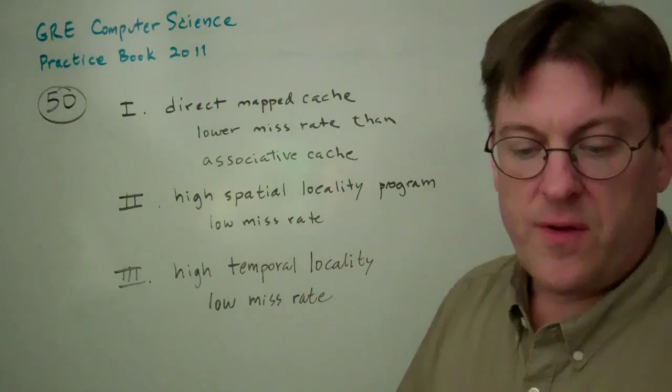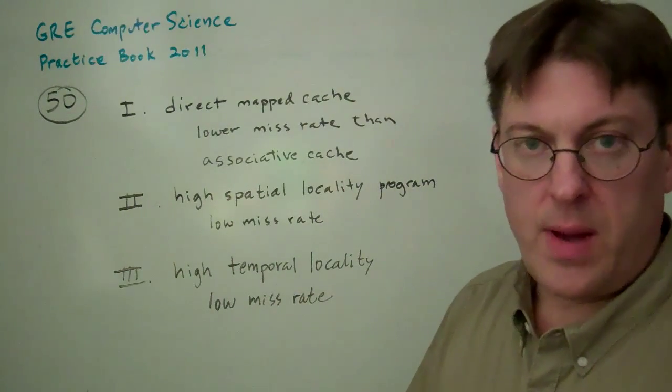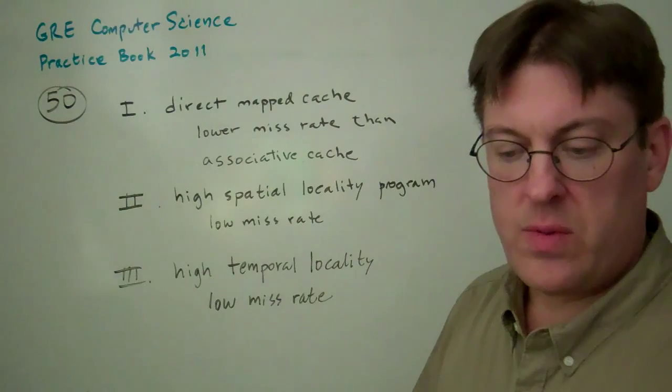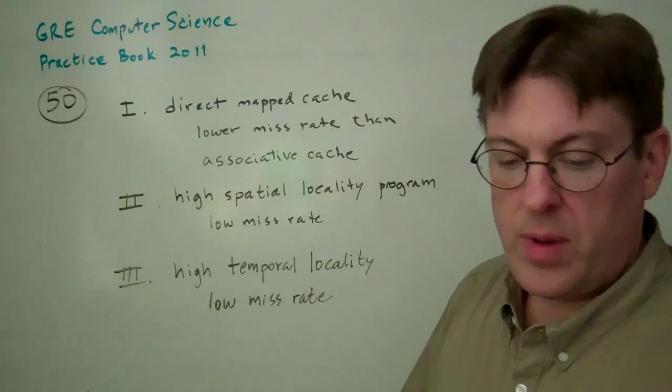Question 50. Which of the following statements about caches are true? 1. A direct mapped cache can have a lower miss rate than an associative cache of the same size, number of blocks.